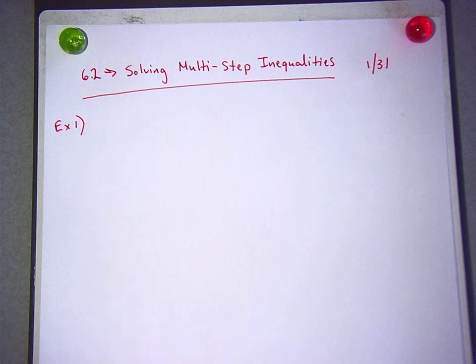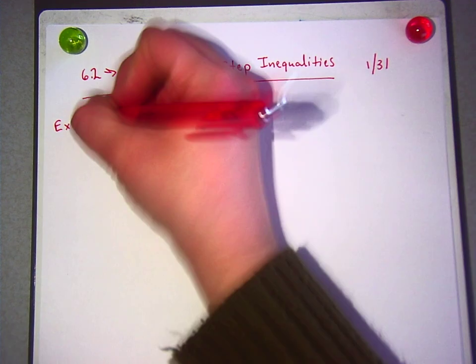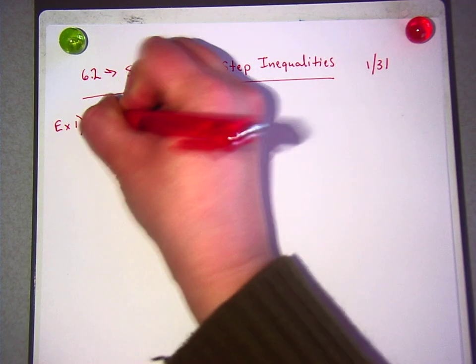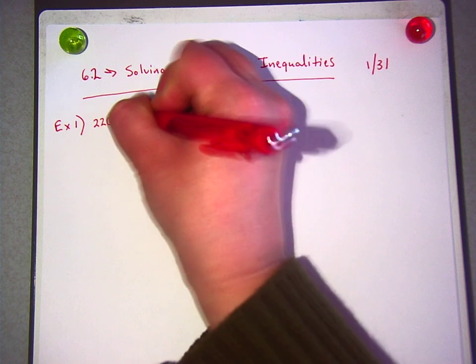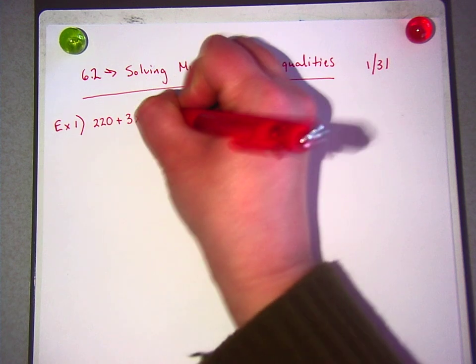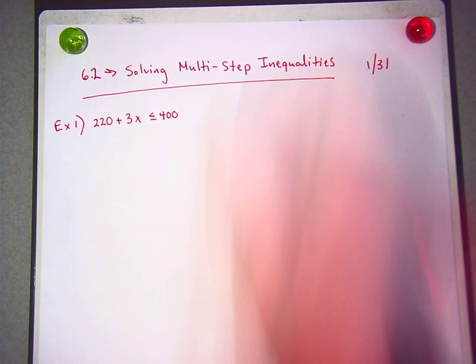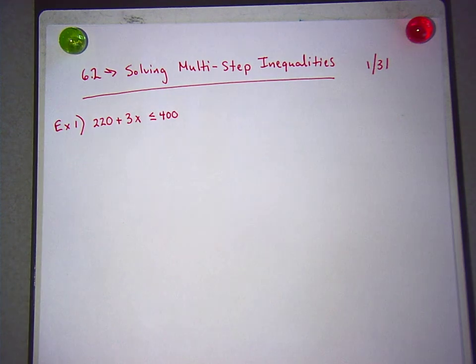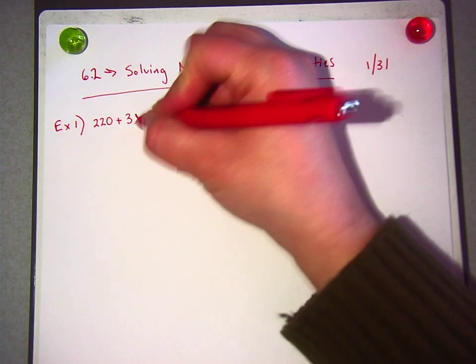Here we go. I'm recording now. Okay, so example one. I want you guys to write 220 plus 3x is less than or equal to 400. Okay. What do you guys think we should do first?